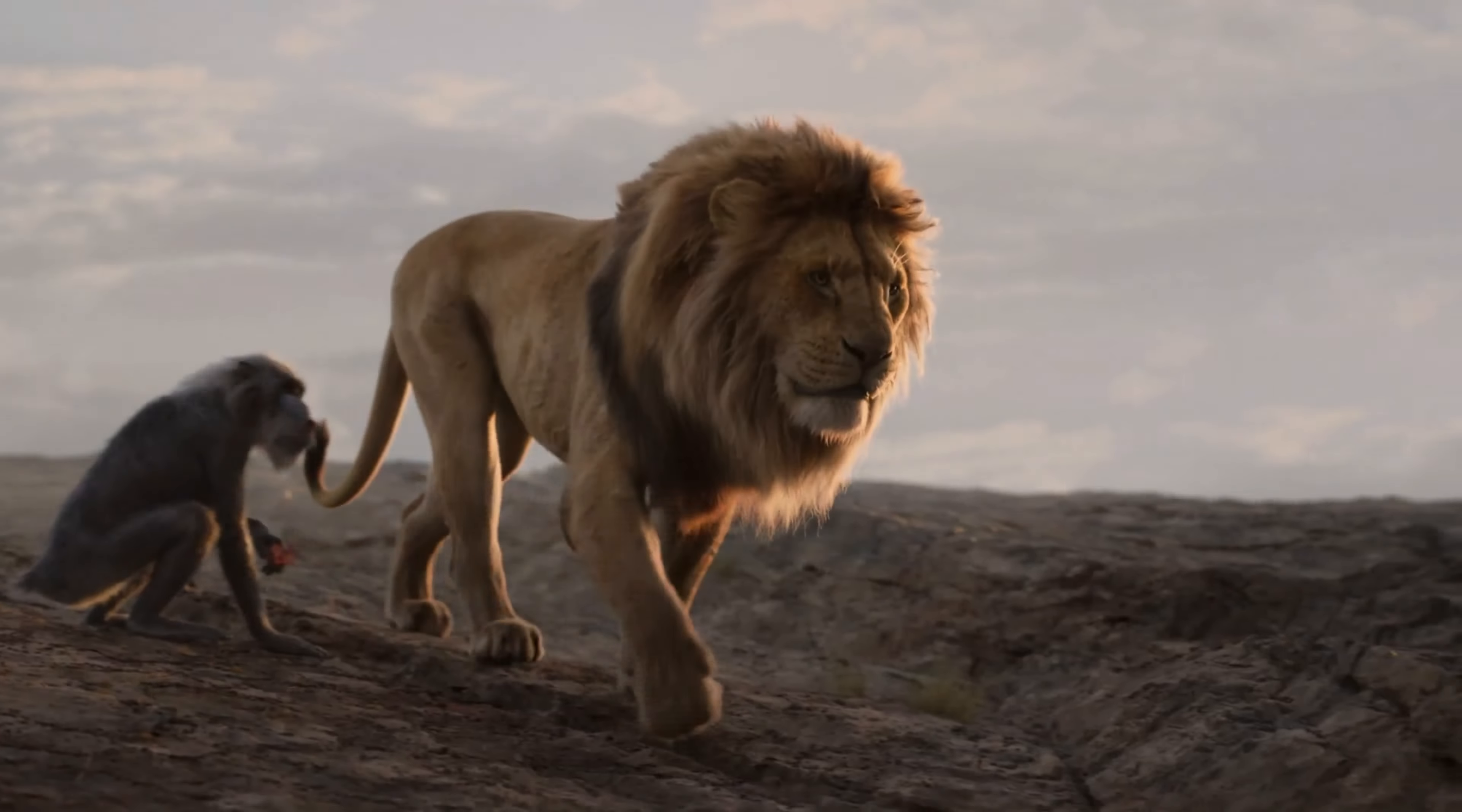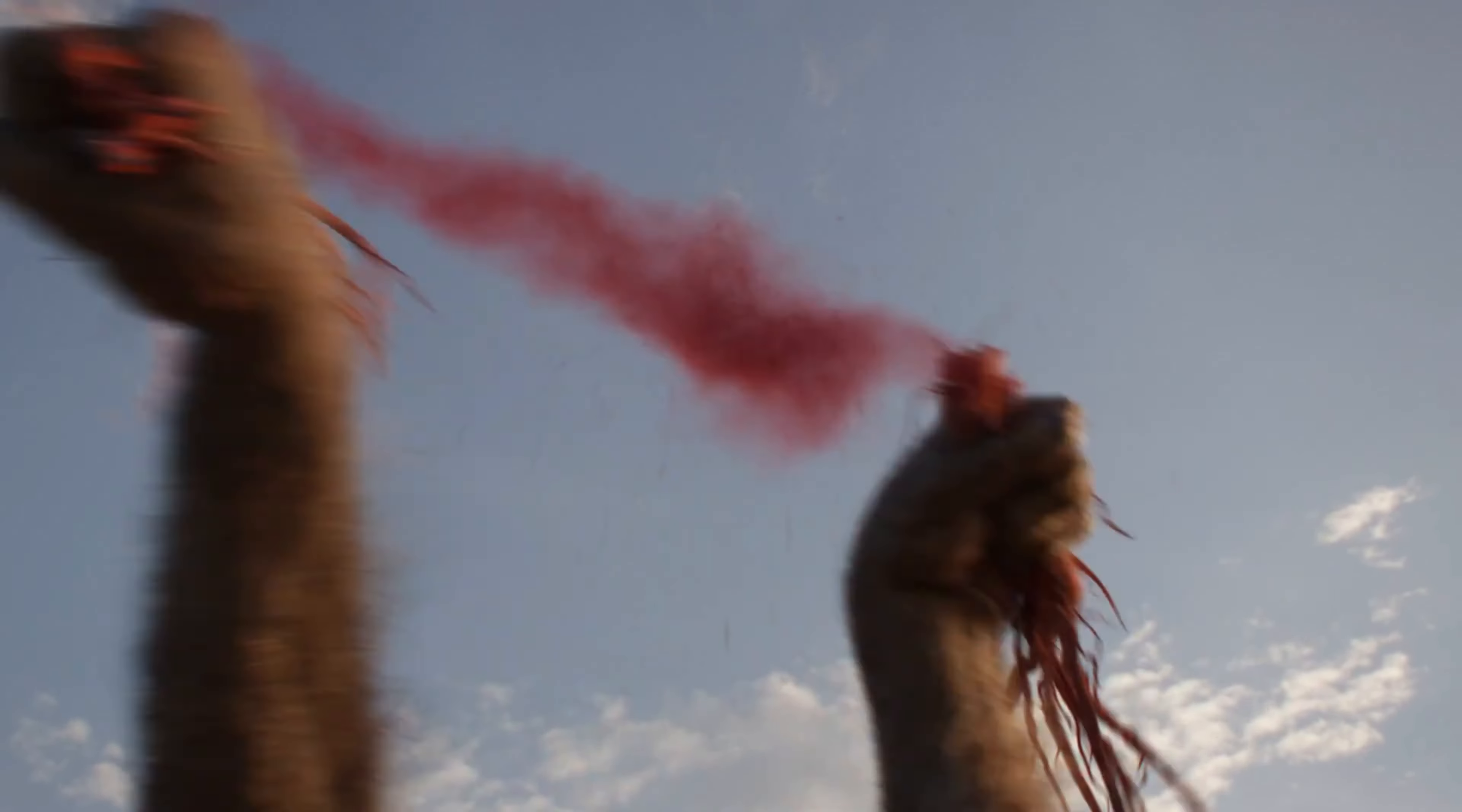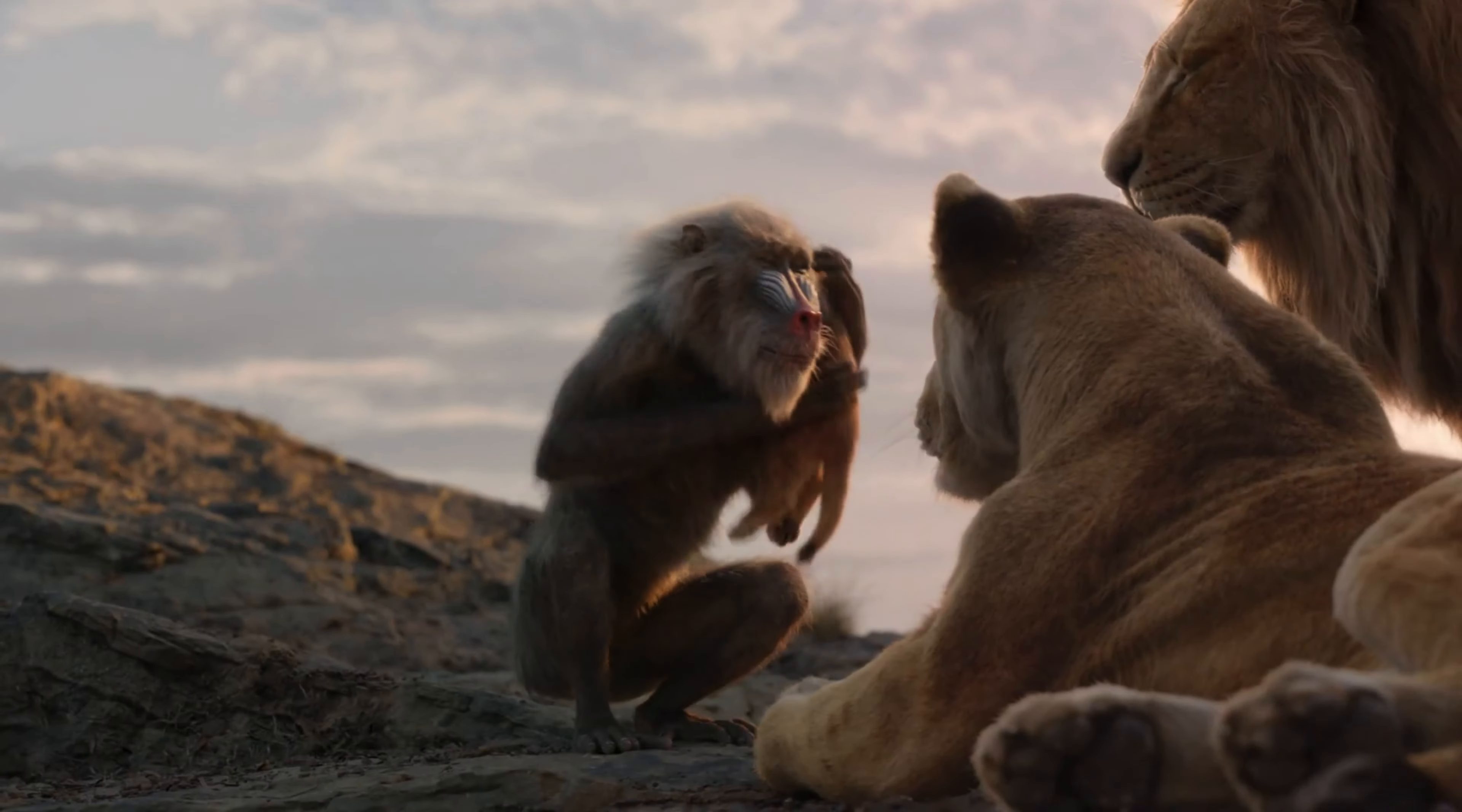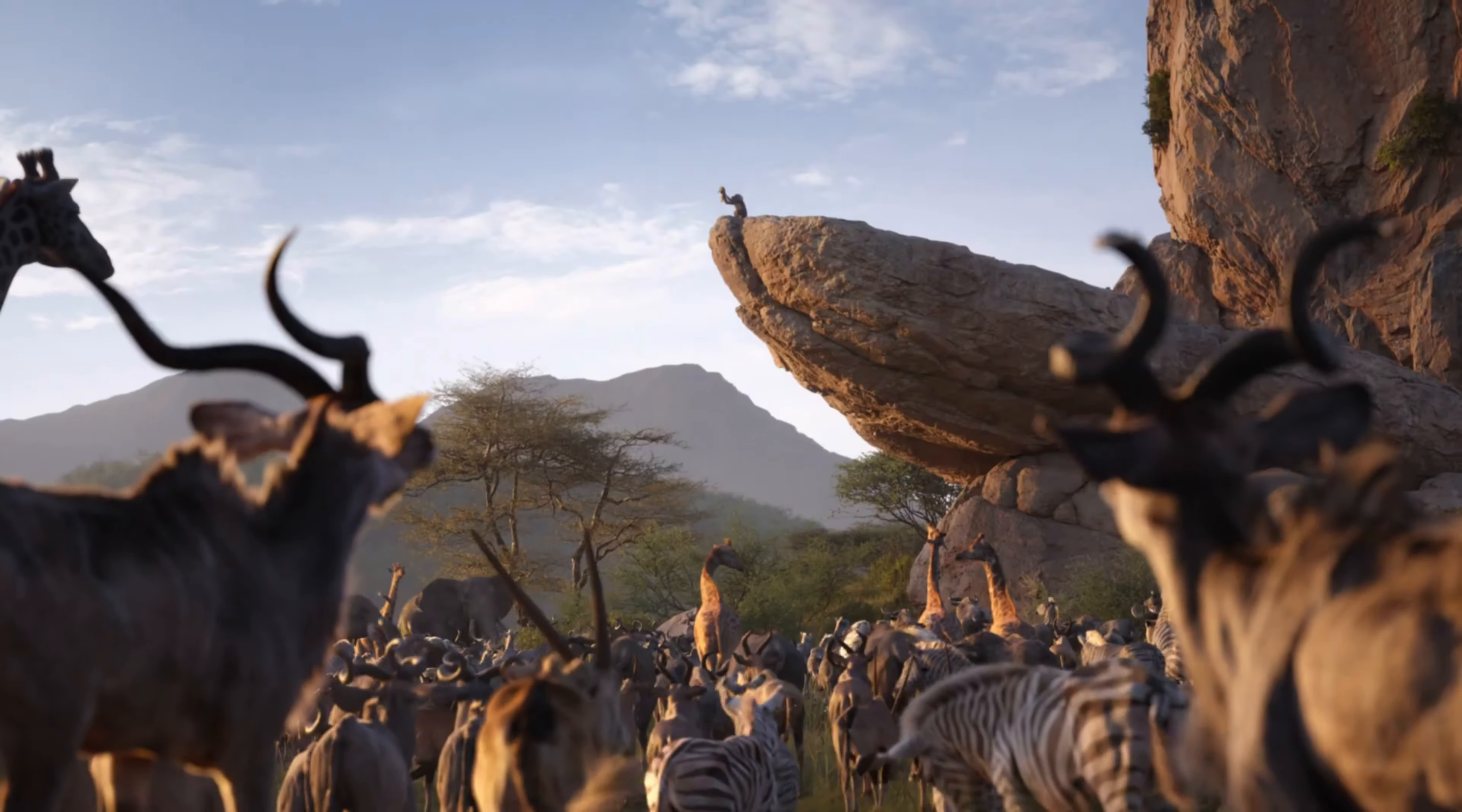Mannich reaction is one of the most important and significant carbon-carbon bond forming approaches in organic synthesis. It's an aminoalkylation of an acidic proton placed next to a carbonyl functional group by formaldehyde, a primary or secondary amine or ammonia, in which its product is actually a beta-aminocarbonyl compound. This reaction was named after German chemist Karl Mannich who discovered such reaction and disclosed it in 1912.